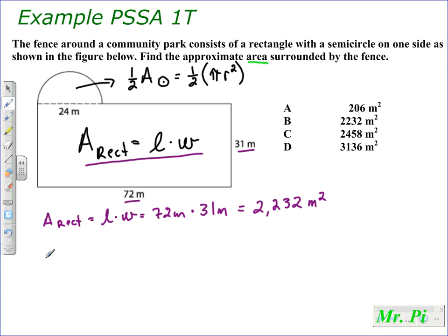The area of a semicircle is equal to one half times the area of a circle, which is given by pi r squared. Now this problem has a little curve ball because you're given the diameter, not the radius. So we don't want to use 24 meters there. We actually want to use 12 because the radius is one half the diameter.